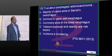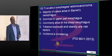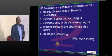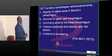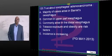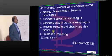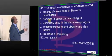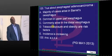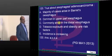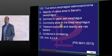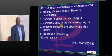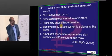Esophageal adenocarcinoma — why is it increasing in modern times? Because of obesity, sedentary lifestyle, and increasing reflux. It is more common in the lower part of the esophagus. It often arises from Barrett's esophagus, and tobacco exposure is a risk factor. In the modern era where obesity is a global pandemic, there is an increased incidence of esophageal adenocarcinoma.